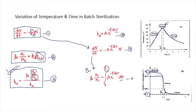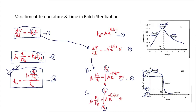To find the number of viable organisms at the end of the cooling period, we integrate from T2 to Tf, where T2 is the time at the start of the cooling period and Tf is the time at the end. These two equations are used for finding viable organisms in the heating and cooling periods. For the holding period, the earlier holding time formula applies.